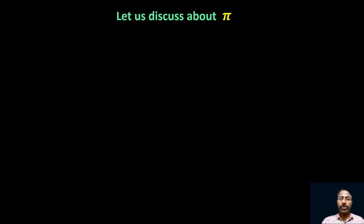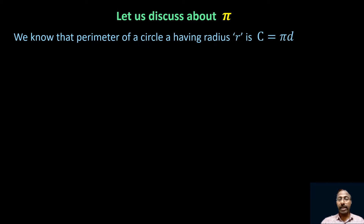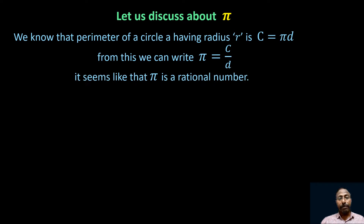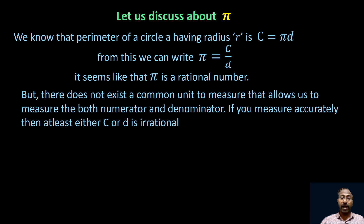Now let us discuss about pi. We know that the circumference of a circle with radius r is C = πd, where d = 2r, so C = 2πr. The diameter is 2r, and from C = πd we can write π = C/d. So is pi rational or irrational? It seems like pi is rational because it is in the form p/q (C/d). But there does not exist a common unit to measure both numerator and denominator, and if you measure accurately, at least either C or d is irrational. So pi is regarded as irrational.